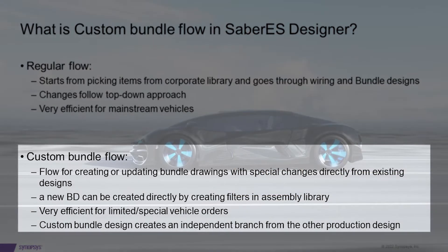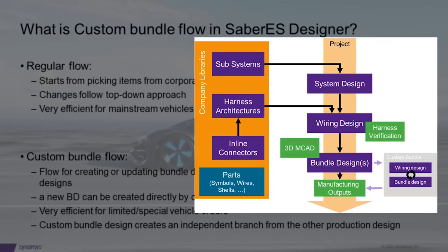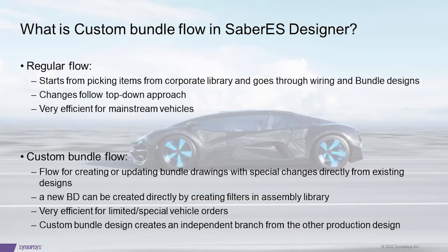The Custom Bundle Flow is used for creating or updating bundle drawings with special changes directly from an existing design. A new bundle design can be created by directly creating filters in the assembly library. This flow is very efficient for limited or special vehicle orders. Custom Bundle design creates an independent branch from the regular production design branch.